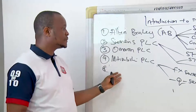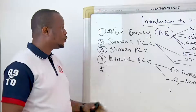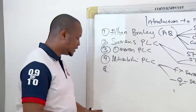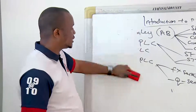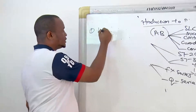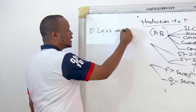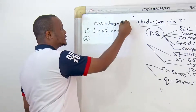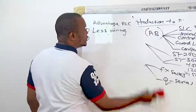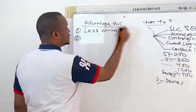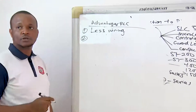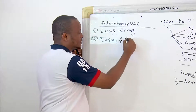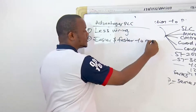What then are the advantages of PLCs over relay logic? Why is the PLC popular? Number one is less wiring — it requires less wiring compared to relay logic. Number two is that it is easier and faster to make changes.